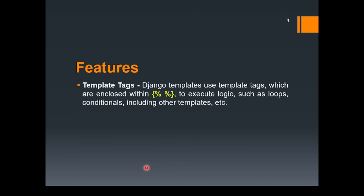Now let's discuss about template tags, which are actually a part of the Django template language. Django templates use template tags enclosed within curly braces with percentage symbols inside. These are used in order to execute logic such as loops, conditional statements, and including other templates.